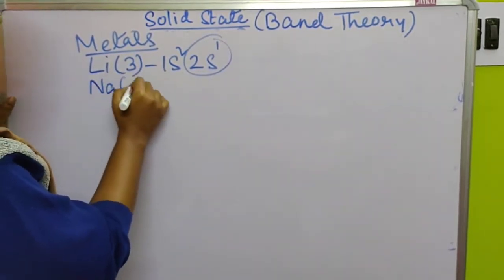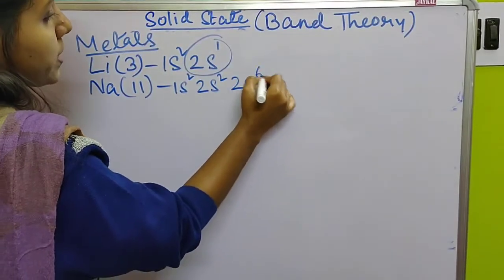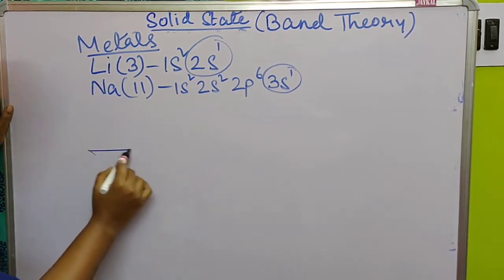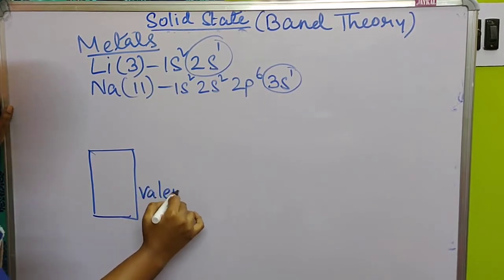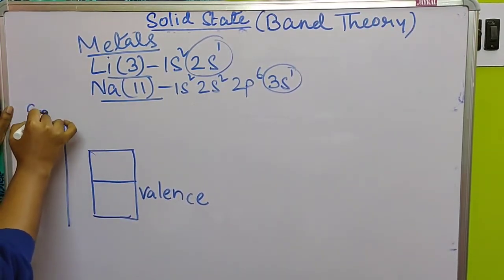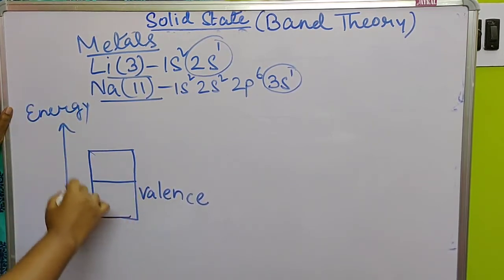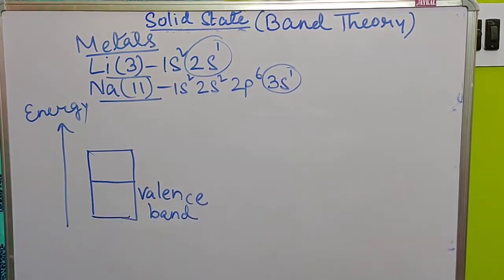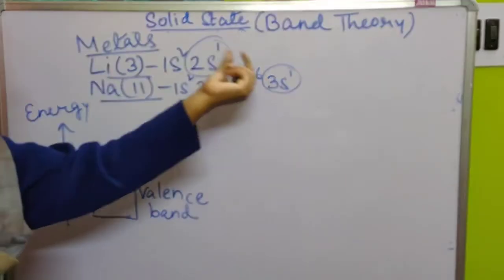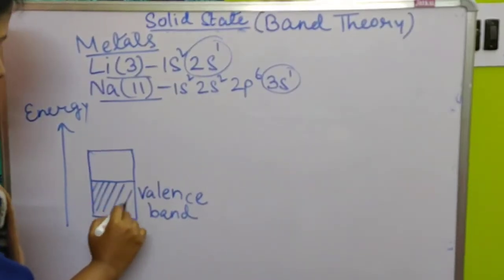In these metals, the orbital containing the valence electron and the energy band representing those electrons is called the valence band. This valence band is half-filled. Above it are vacant higher orbitals — for lithium, the 2s band (valence band) and the 2p band (vacant above). The 2p band is totally vacant with zero electrons. The energy gap between them is low.